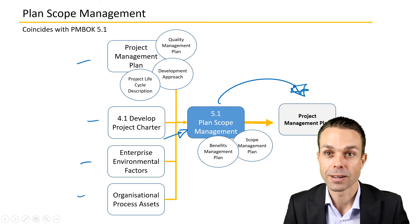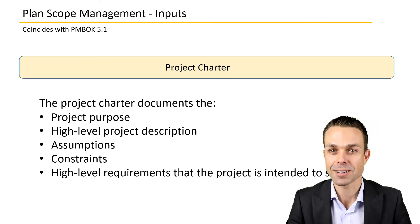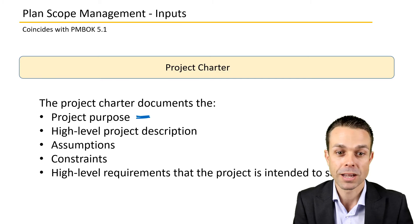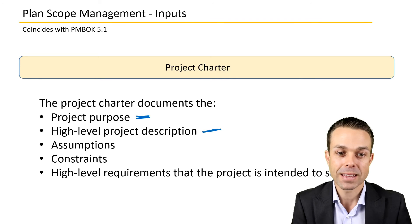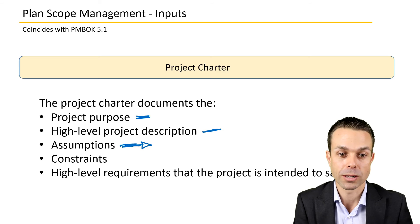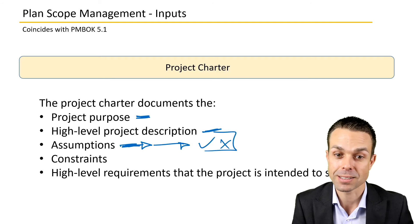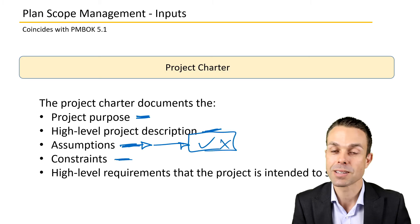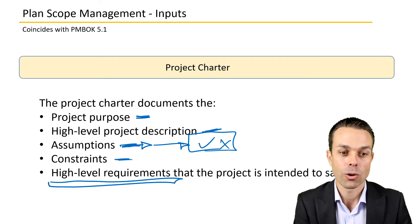Looking at the inputs in more detail: the project charter gives us the project purpose, the high-level project description — which gives us direction on how and where to gather requirements — and any assumptions that were made, such as assuming something would be easy to access when it might actually be difficult. We definitely need to know what was assumed when we initiated this project.